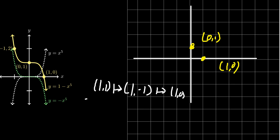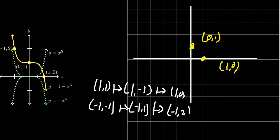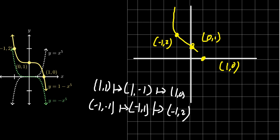What about the third point? If we take the point negative 1, negative 1, by reflection it gets sent to negative 1, positive 1. And then by shifting it up, that'll go to negative one comma two. So we started off with the point negative 1, negative 1, that reflects up to become negative 1, 1, and then you shifted one more upward to give you negative 1, 2. And using these three points, we're going to connect the dots to give us our curve.